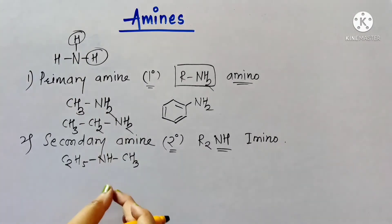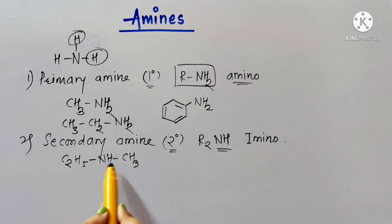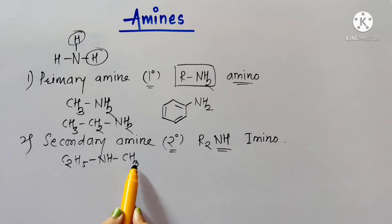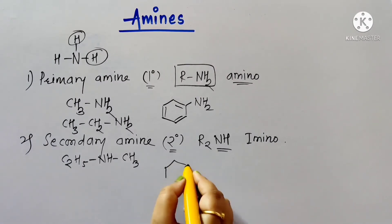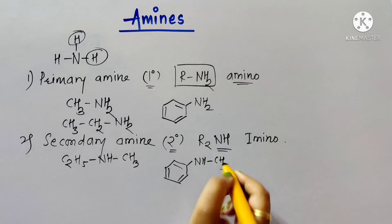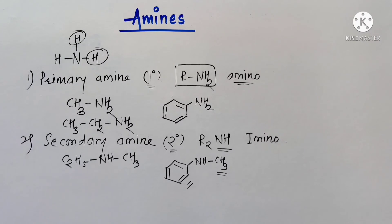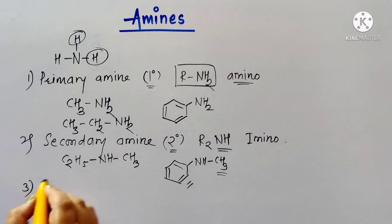As an example of a secondary amine, two hydrogen atoms of ammonia are replaced by alkyl groups. Here the two alkyl groups attached to nitrogen are different — a methyl group and an ethyl group — so the name for this compound is ethylmethylamine. Another example has two hydrogen atoms replaced by an alkyl and an aryl group, which is also a secondary amine.